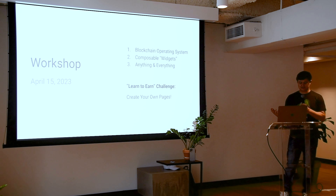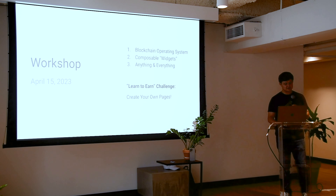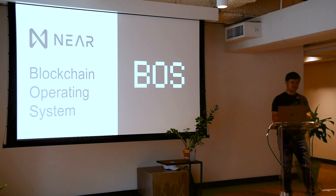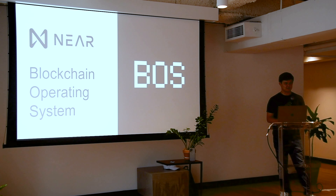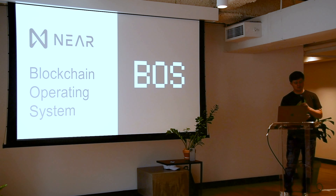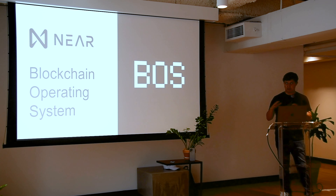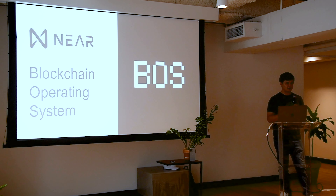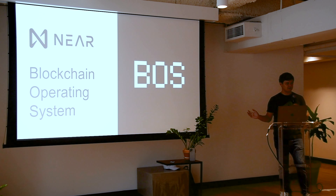We're calling it the blockchain operating system because just like Linux, Windows, or Mac, this operating system makes it easier for users to interact with blockchains — and that means any blockchain, not just NIR. So the real magic of BOSS would be that you could use the front-end components to interact with any blockchain, whether a contract running on Ethereum, a Cosmos blockchain, or anything under the sun of the blockchain ecosystem.